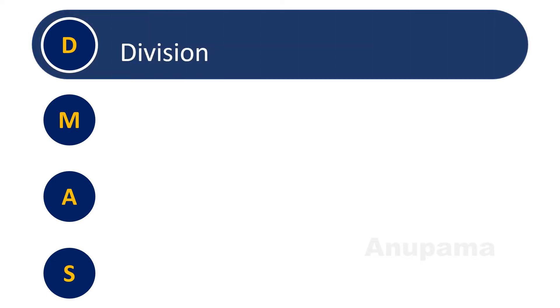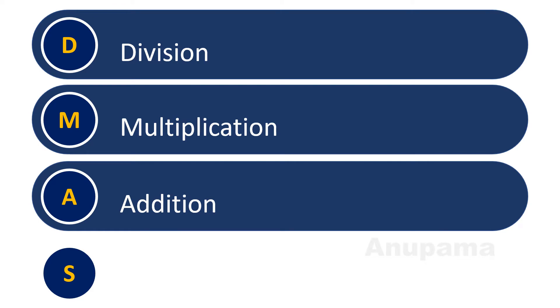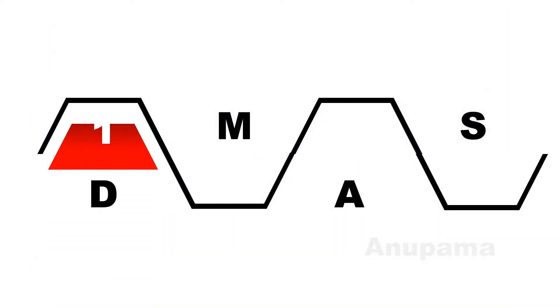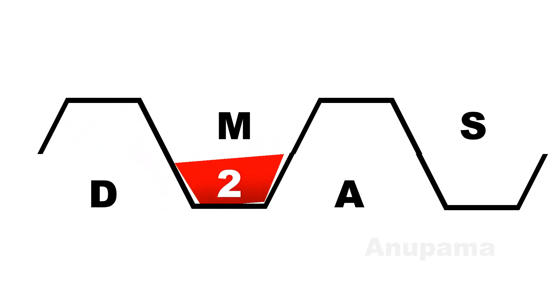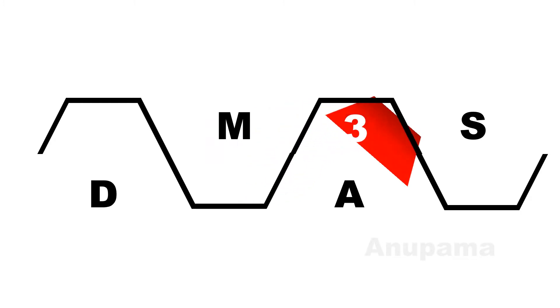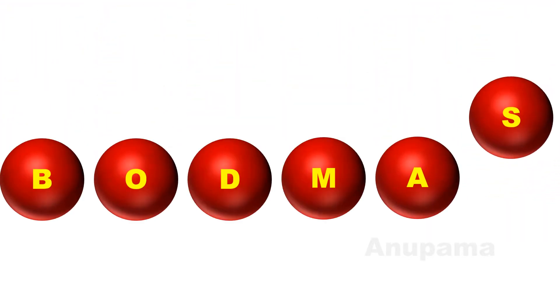We have studied the DMAS rule. D stands for division, M stands for multiplication, A stands for addition, and S stands for subtraction. We need to perform division first, then multiplication, then addition, and at last subtraction. We have studied BODMAS also.